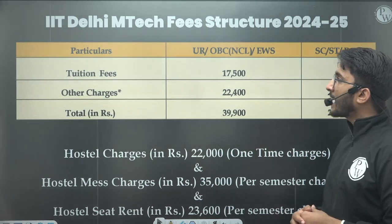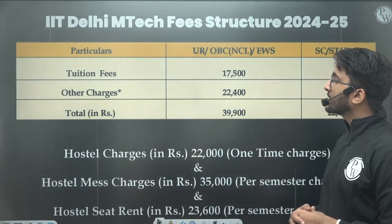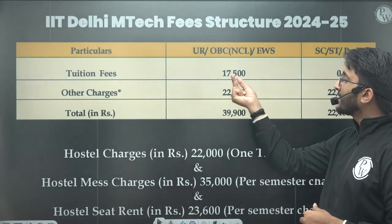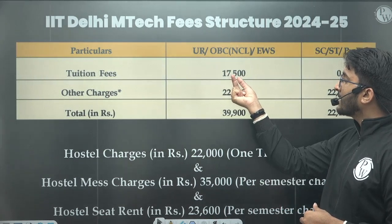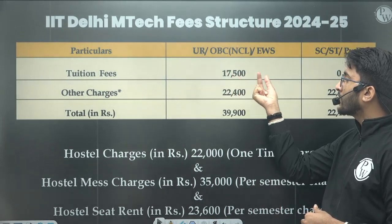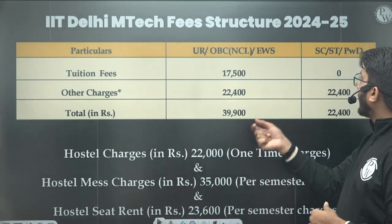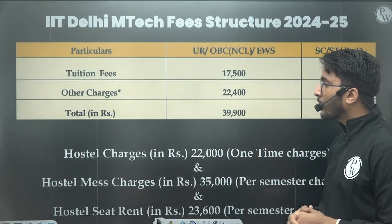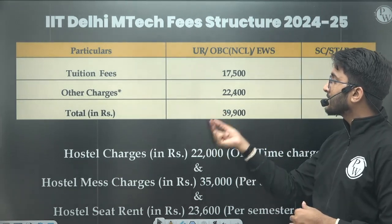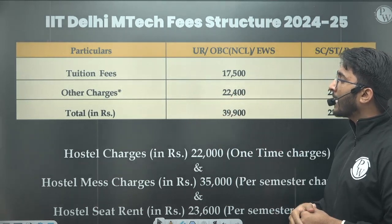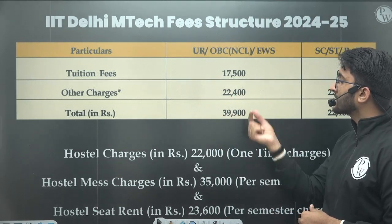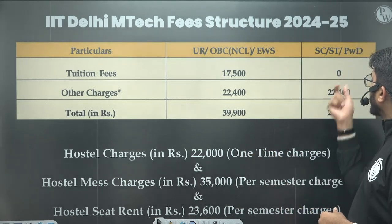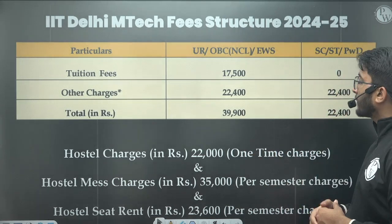Next, if we talk about IIT Delhi M-TECH fees structure — in IIT Delhi, the tuition fees is ₹17,500, and for SC, ST, and PWD category the tuition fees is waived off. The other charges are ₹22,400, making the total fees ₹39,900 for General category, and ₹22,400 for SC, ST, and PWD.